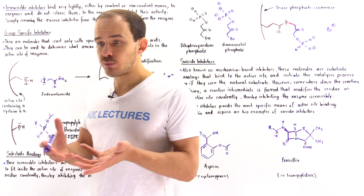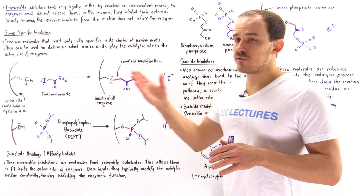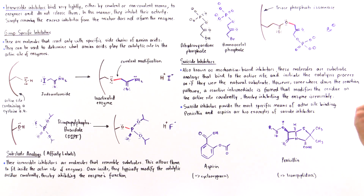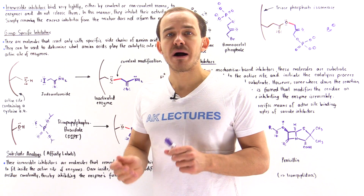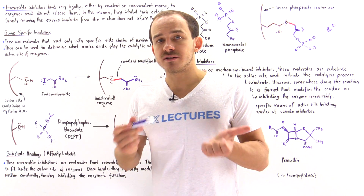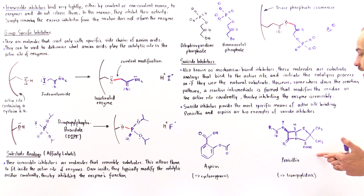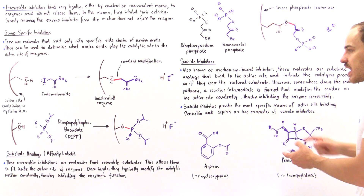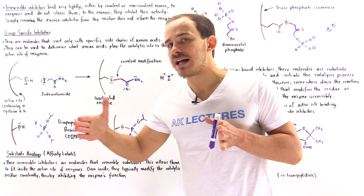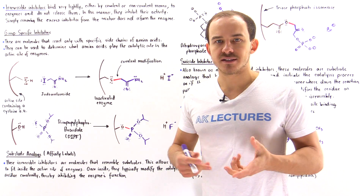Two examples of suicide inhibitors commonly used in medicine are penicillin and aspirin. Penicillin is an antibiotic that binds into the active site of transpeptidase, the enzyme bacterial cells use to build cell walls. It begins the catalyzation process, but forms an intermediate that blocks and irreversibly inhibits the transpeptidase, preventing bacterial cell wall synthesis.